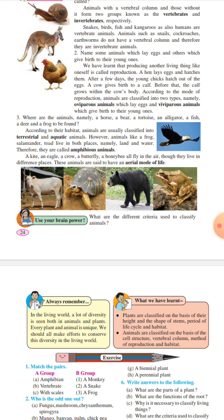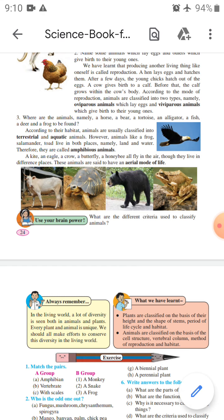So students, we learned lesson number three, Diversity in Living Things - plants and animals. Students, today we will stop here. Okay, bye bye.